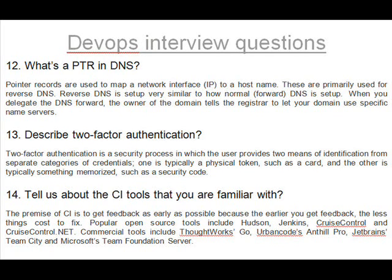Question 14: Tell us about the CI tools that you are familiar with. The premise of CI is to get feedback as early as possible, because the earlier you get feedback, the less things cost to fix. Popular open source tools include Hudson, Jenkins, Cruise Control, and CruiseControl.NET. Commercial tools include ThoughtWorks Go, Urban Code, Tilt Pro, JetBrains TeamCity, and Microsoft's Team Foundation Server.